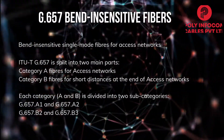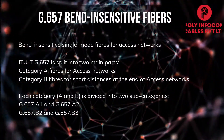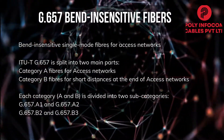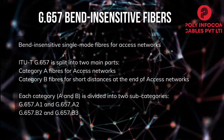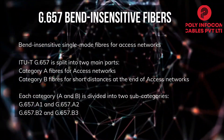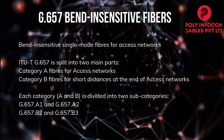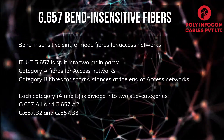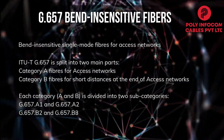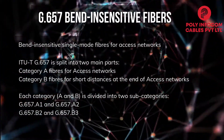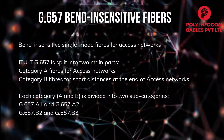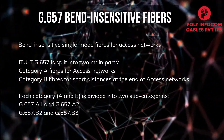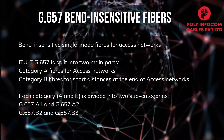G657 are bend-insensitive single-mode fibers. They are categorized into Category A and Category B fibers. Category A, which are used in access networks, are split into G657A1 and G657A2 fibers. Category B, which are used in short distances at the end of access networks, are split into G657B2 and G657B3 fibers.